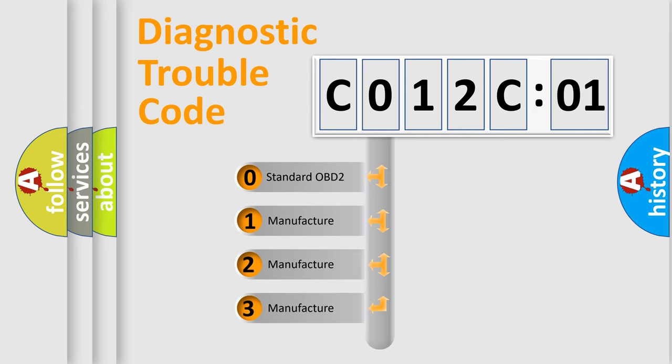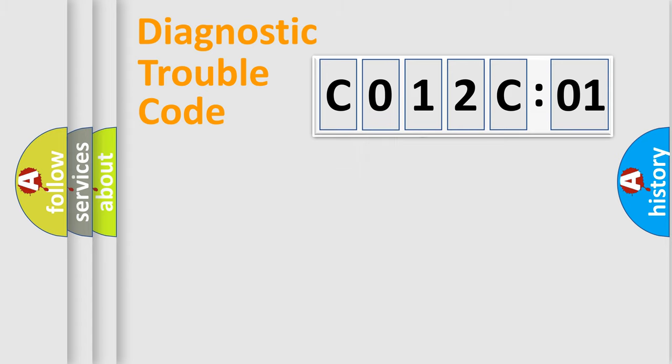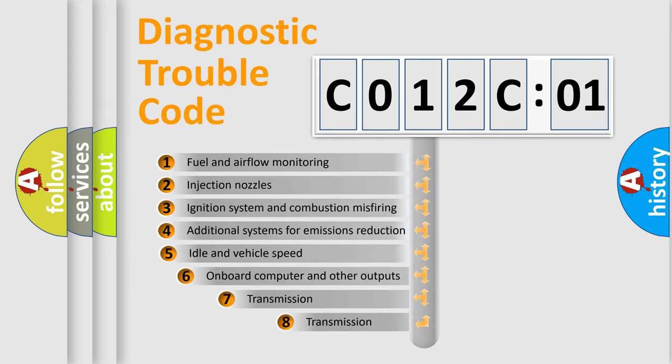If the second character is expressed as zero, it is a standardized error. In the case of numbers 1, 2, or 3, it is a manufacturer-specific expression of the error.